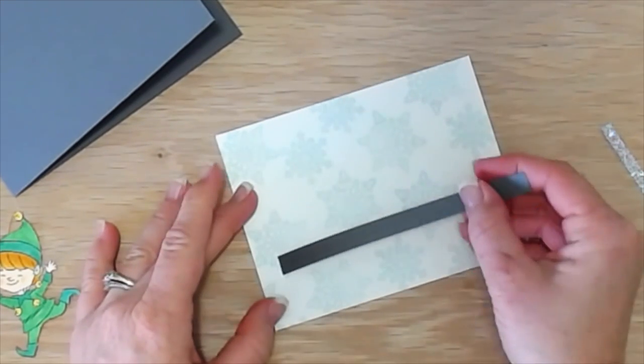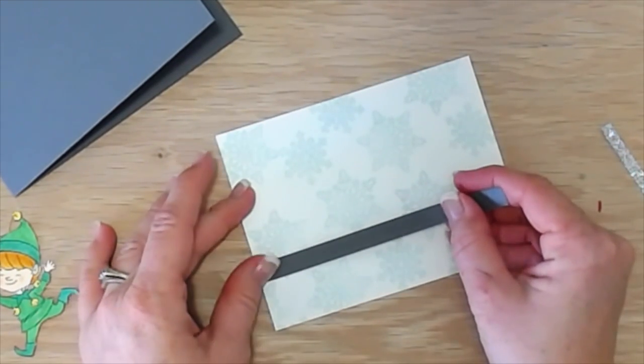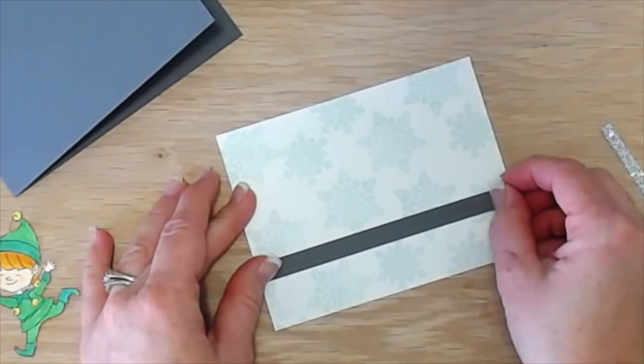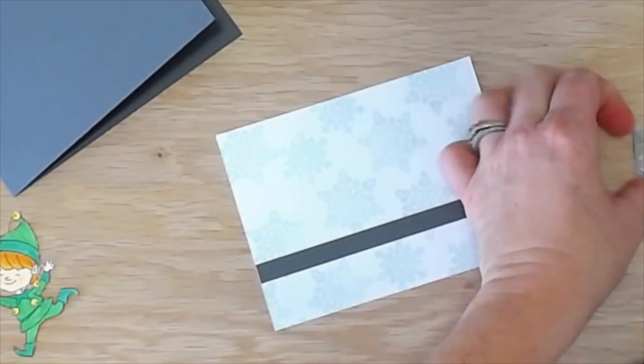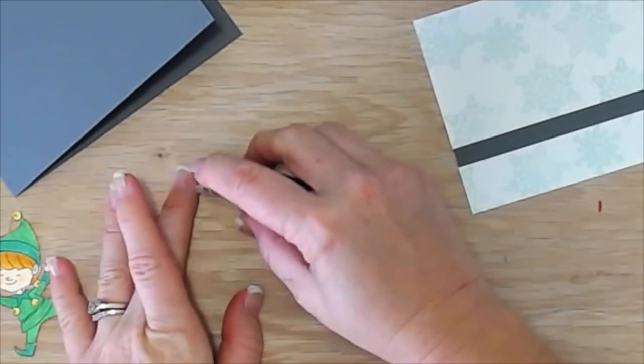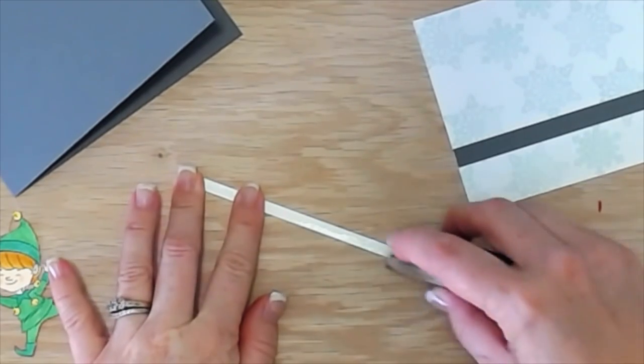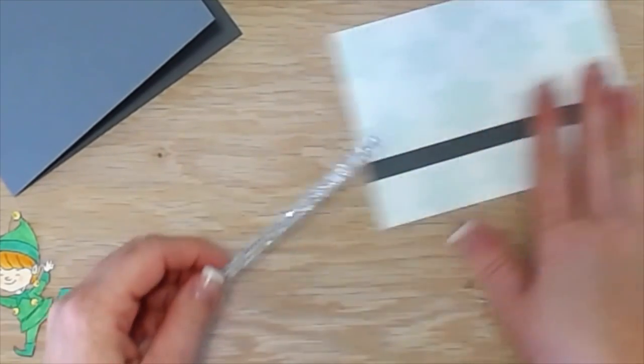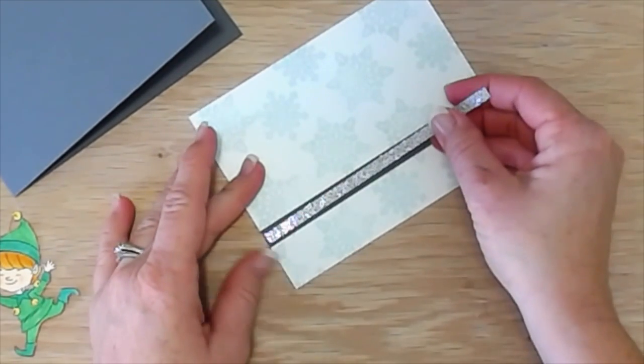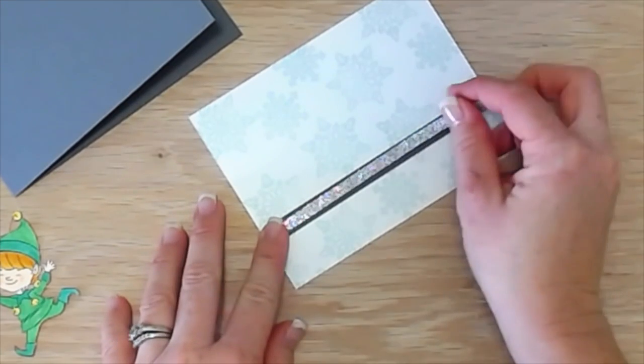So I'm going to layer this down. And then I have a quarter inch strip by five and a quarter of glimmer paper, silver glimmer paper. And I'm going to layer this piece down.